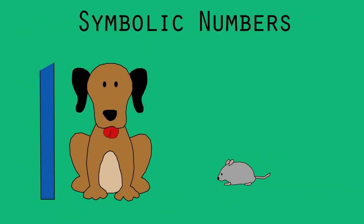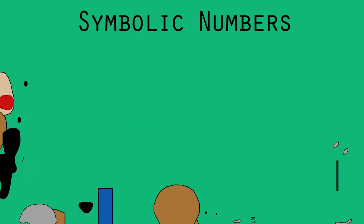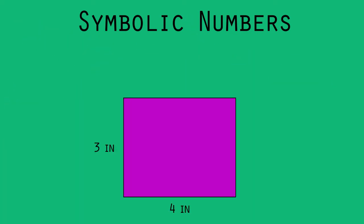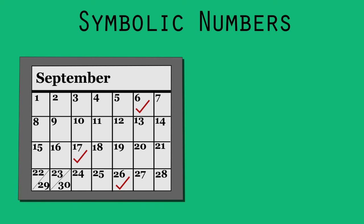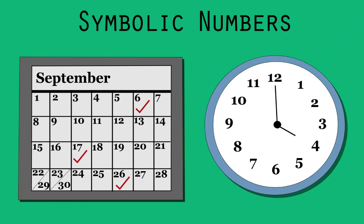So humans use symbolic numbers to represent sizes, distances, areas, volumes, numbers of objects, numbers of events, lengths of time, all sorts of things like that.